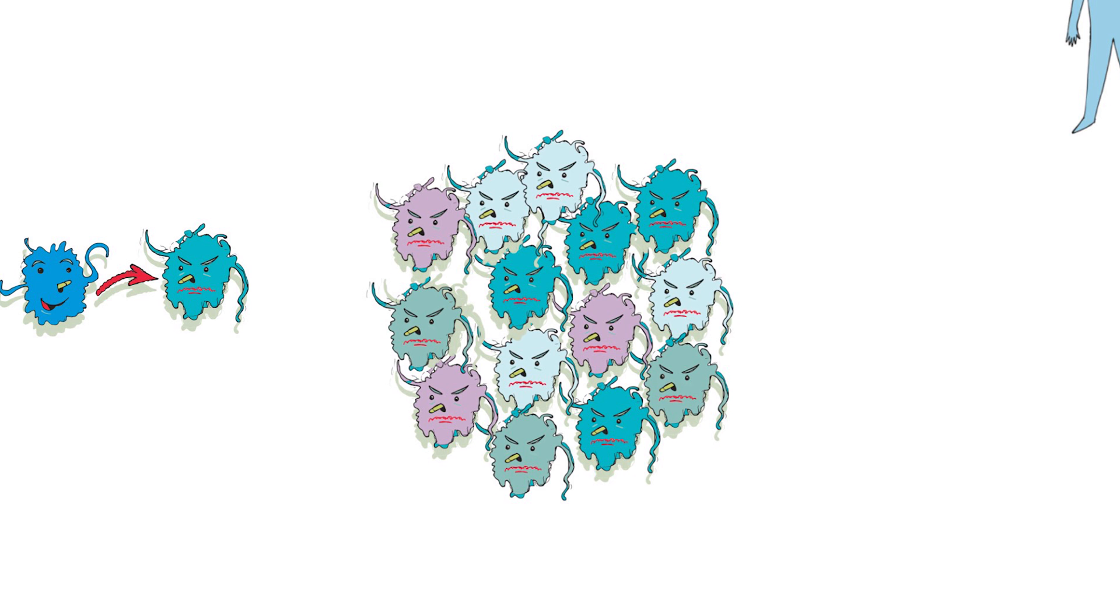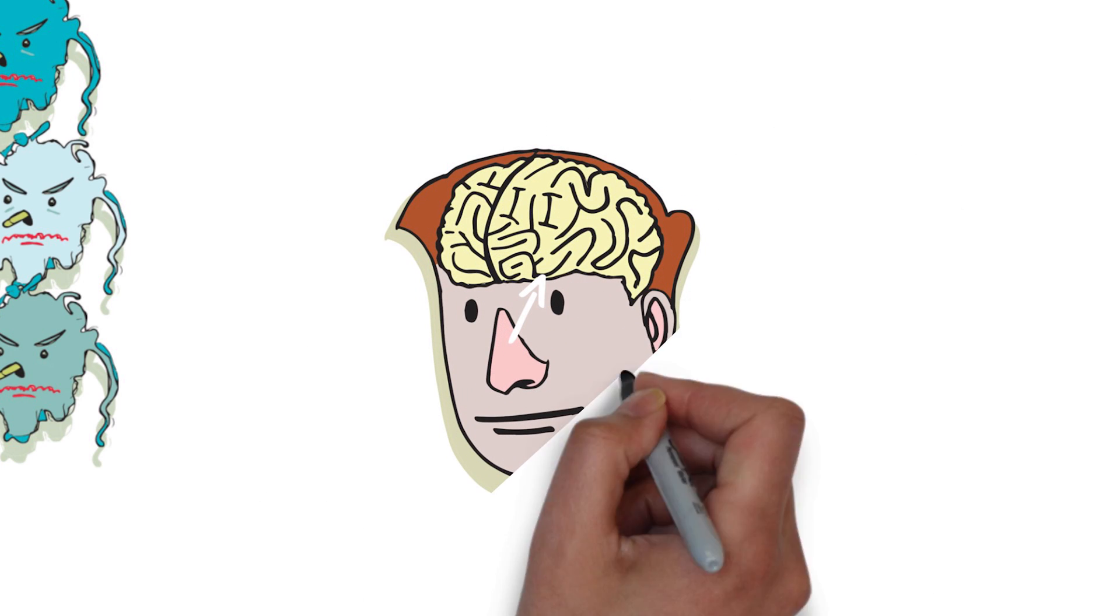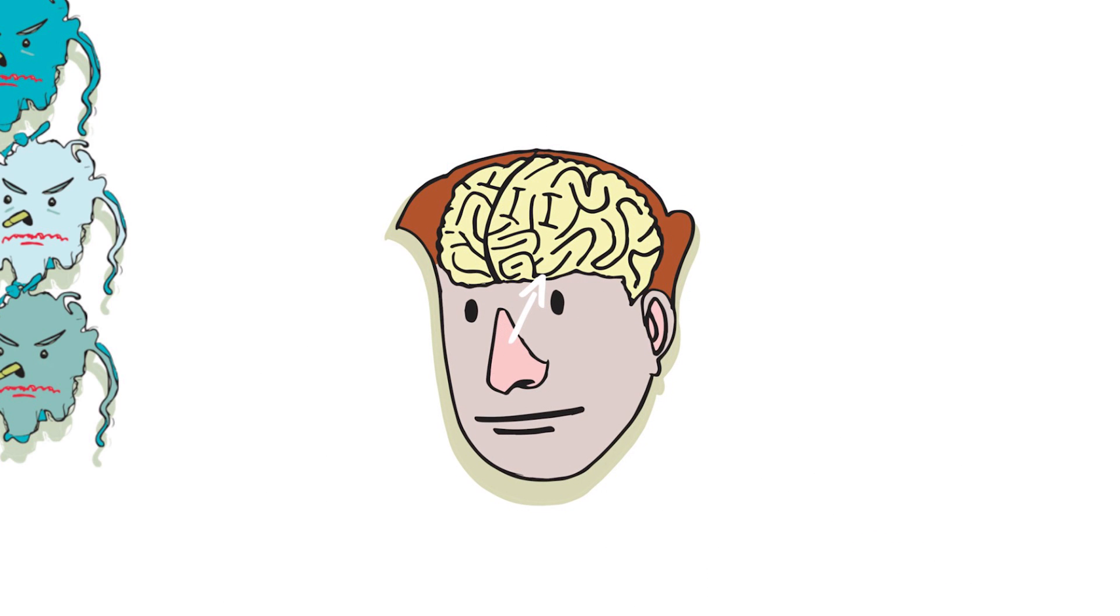Research has shown that these proteins can move from cell to cell. From the nose, they travel to the part of the brain that controls sense of smell. Once there, they continue to spread throughout the brain, eventually reaching the cells responsible for controlling voluntary movement.